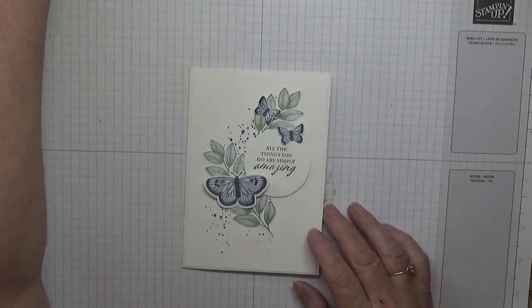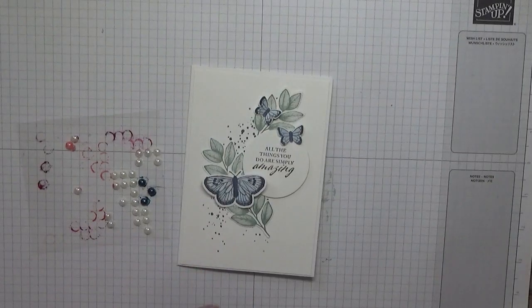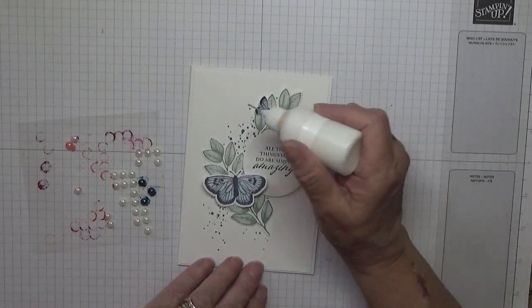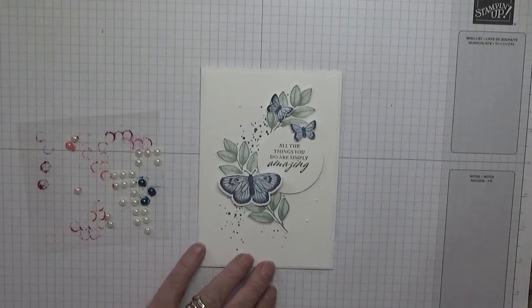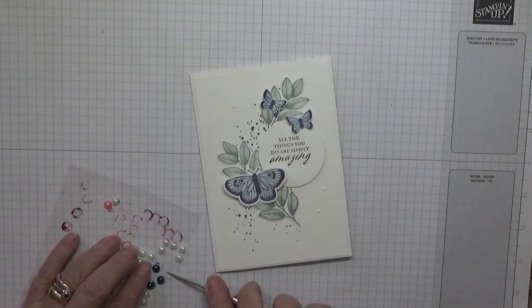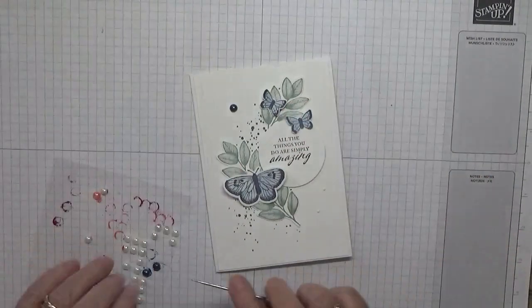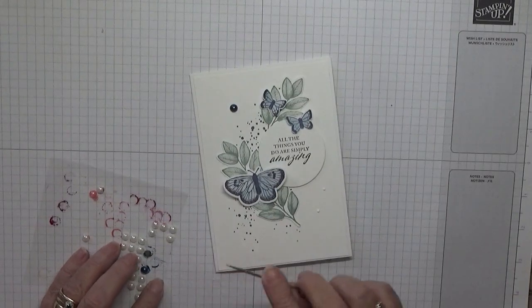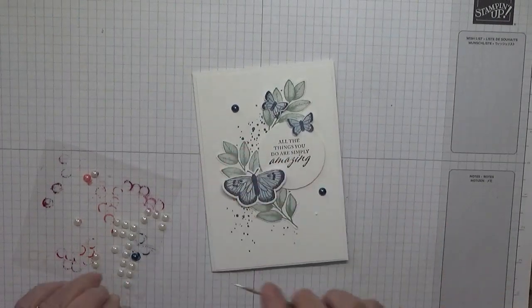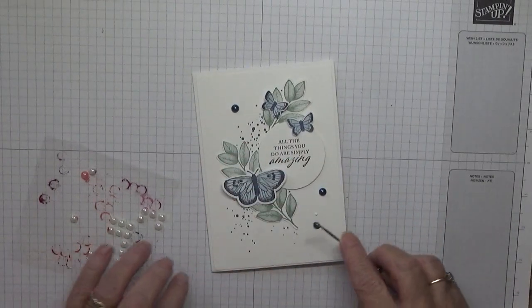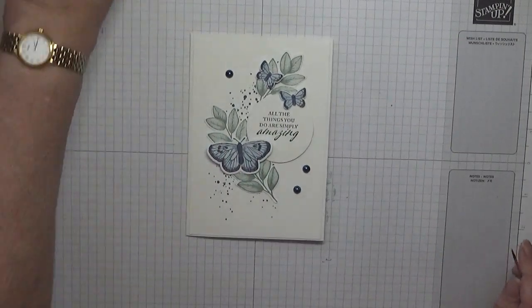All we've got left to do is put some gems on. I've colored three pearls in Misty Moonlight, so I'm going to put one there and I'm going to put two here. I colored these in earlier so that they'd be dry ready to be picked up. There we are, that looks nice.